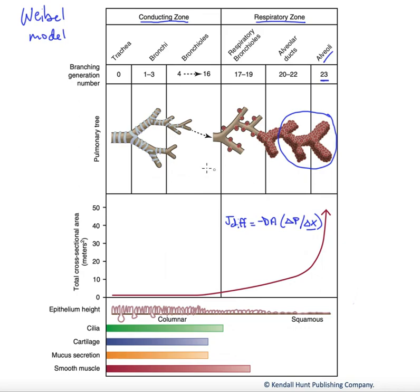Now, one of the important components of this massive division is to generate all of these individual alveoli. And if we come down to look at this graph, what we find is that the cross-sectional area of the conducting zone is very, very low.